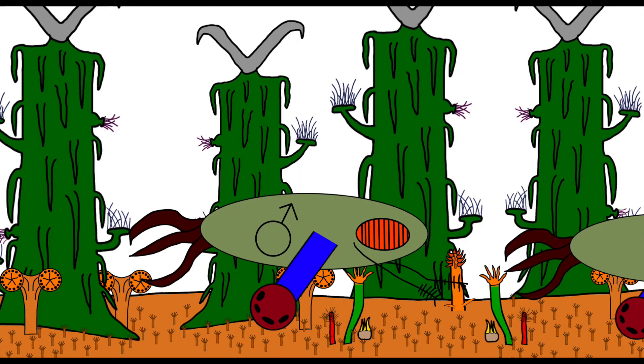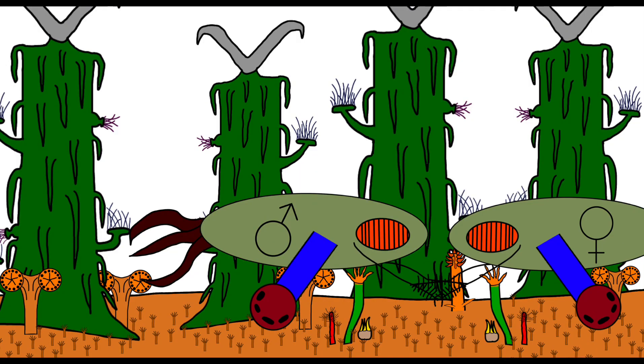To do this, the male will touch the very front of the other's body with its hands. If the other begins to leave, it was a male. If it stays, it's a female.